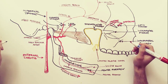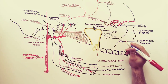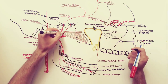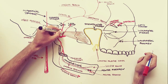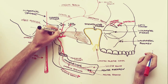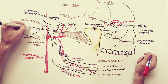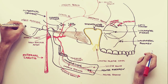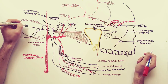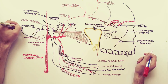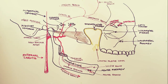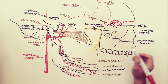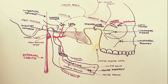In approximately half of subjects, the accessory meningeal artery arises from the maxillary artery. In the rest of the cases, it can arise directly from the middle meningeal artery. The accessory meningeal artery may be distributed only to adjacent muscles and bone, but when best developed, runs through the foramen ovale with the mandibular nerve to supply that nerve, the trigeminal ganglion, and adjacent dura.